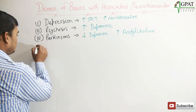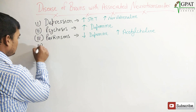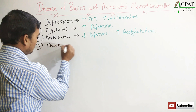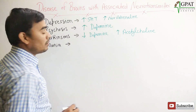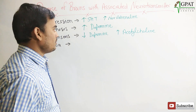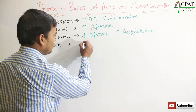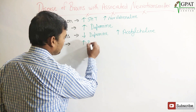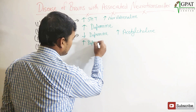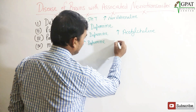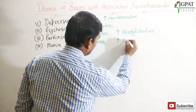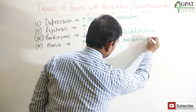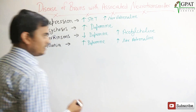Next is mania. In mania, what happens is increased dopamine and increased noradrenaline.